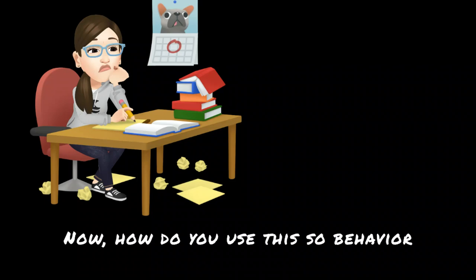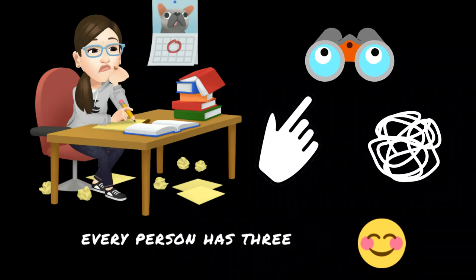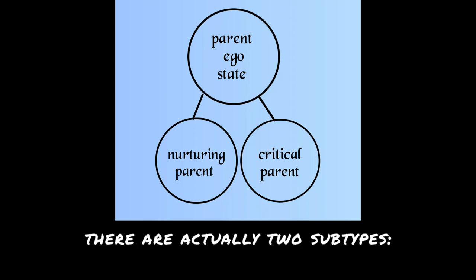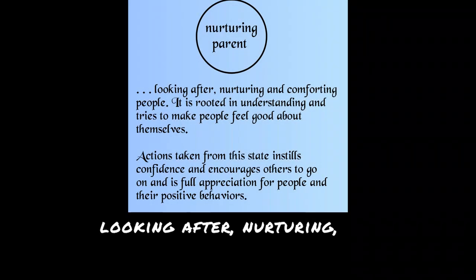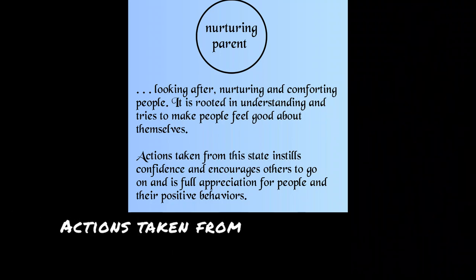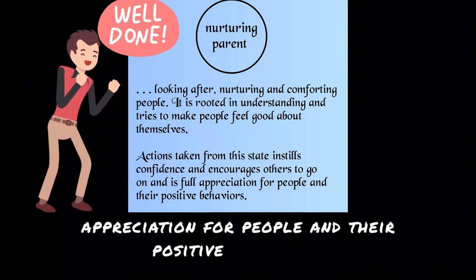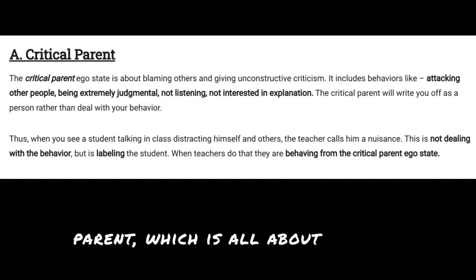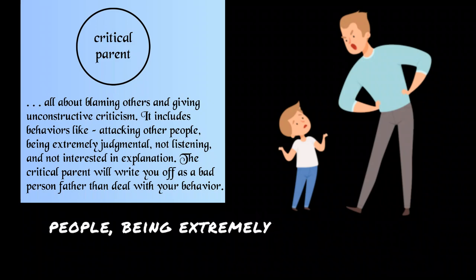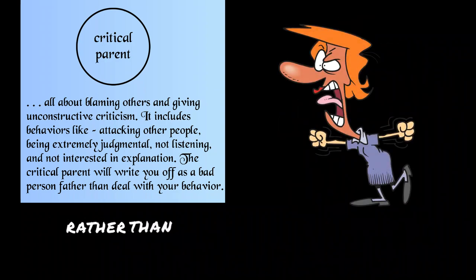How do you use this so behavior can be identified, observed, and analyzed? According to Dr. Berne, every person has three ego states: parent, adult, and child. Concerning the parent ego state, there are two subtypes. The nurturing parent is described as looking after, nurturing, and comforting people — rooted in understanding, trying to make people feel good about themselves, instilling confidence and encouraging others. The second is the critical parent, which is all about blaming others and giving unconstructive criticism — attacking people, being extremely judgmental, not listening, and not interested in explanations. The critical parent will rate you off as a bad person rather than deal with your behavior.